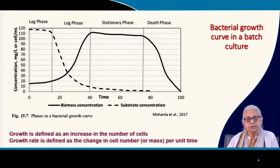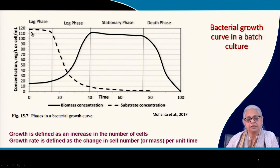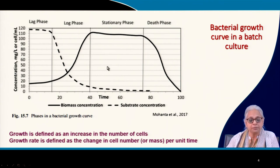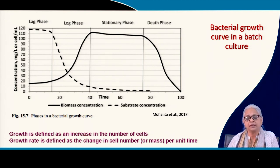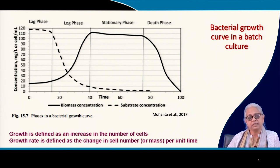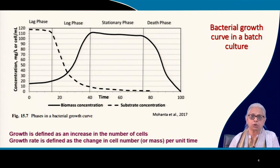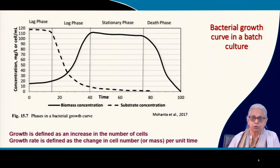When doing this in a batch culture and drawing a curve, you get two lines: the dark black line is your biomass concentration and the dashed line is the substrate concentration — for example, glucose as the limiting nutrient. The substrate is the growth-limiting nutrient, and there is only one nutrient limiting the growth of the bacteria in these experiments.